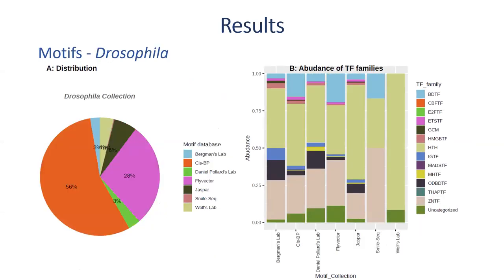For the insect data, we also collected motifs and those families are also consistent — we can see the basic domain, helix-loop-helix domain, and zinc finger domain. Probably these transcription factor families are more studied compared to others. The main contributor of motifs for Drosophila was also the JASPAR database, followed by FlyFactor Survey. For Drosophila, we had about 2,900 motifs available for our benchmark datasets.